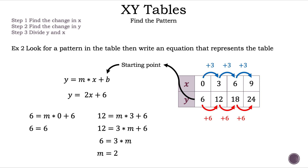Now let's try another way to find M. What do we think is another way to find M? That's right — we can use the rate of change for X and Y, by dividing the change of Y over the change of X, which is positive 6 over positive 3, which is 2. There we have it — two different ways to find the slope. That is example 2.